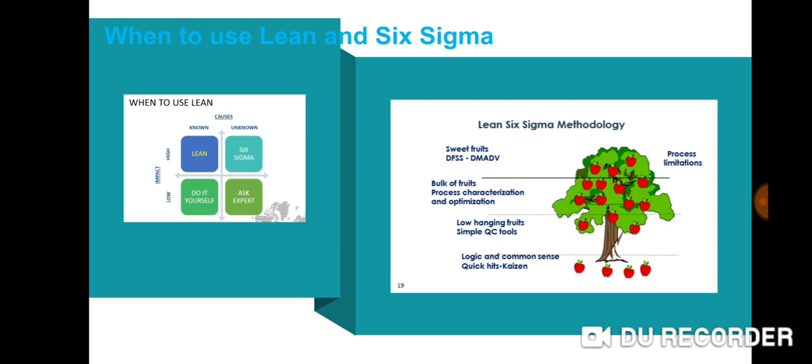On the right side you find a tree with the apples. This picture illustrates: if the bottom line, the dotted line where you have logic and common sense, that means it's a quick fix where we can apply Kaizen technique and bring the solutions. Another layer is low-hanging fruits—that means we need to use some quality control tools to bring the solutions.